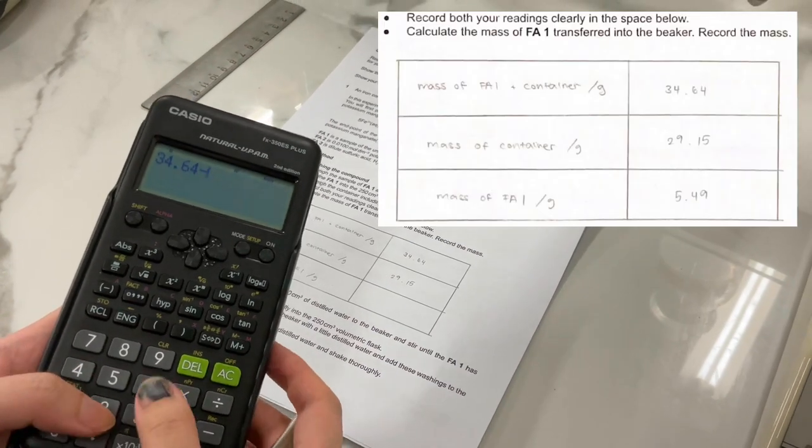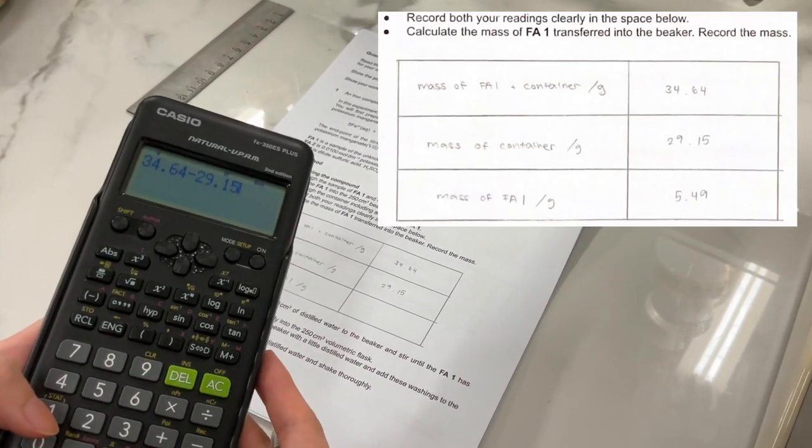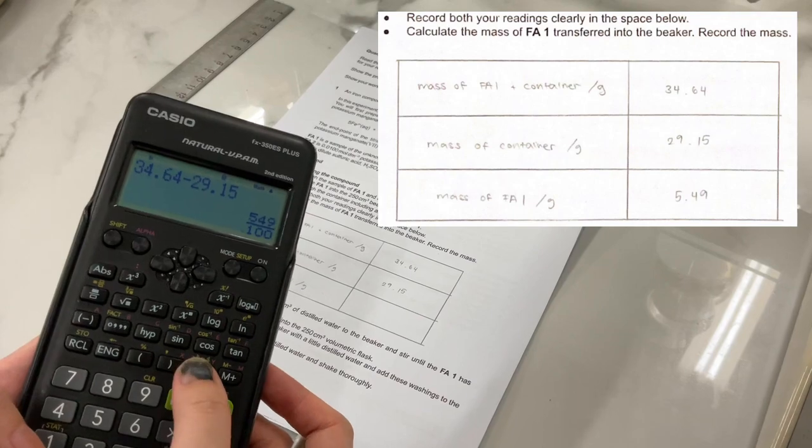You may draw a table like I did here and use it to calculate the mass of FA1 by subtracting the two masses that were recorded before.